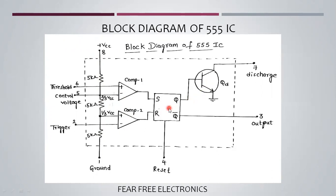The SR flip-flop has two inputs and two outputs. S and R are the inputs, and Q and Q-bar are the outputs. Q is the normal output and Q-bar is the complement of that output. The inputs and outputs are only in digital format, either 0 or 1. S is Set and R is Reset. If the Set input is 1, then the output Q is 1. If we Reset the input, the output is 0.